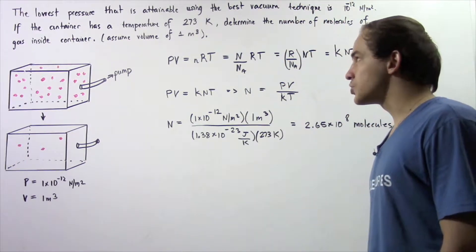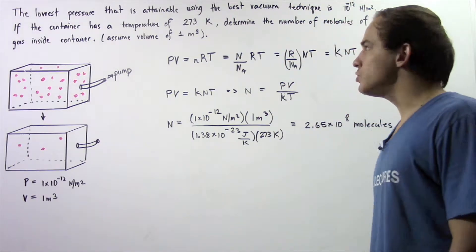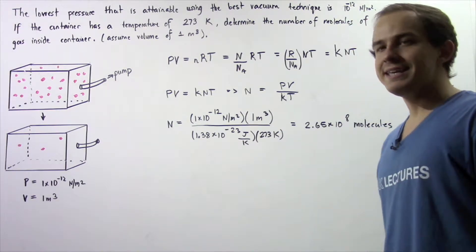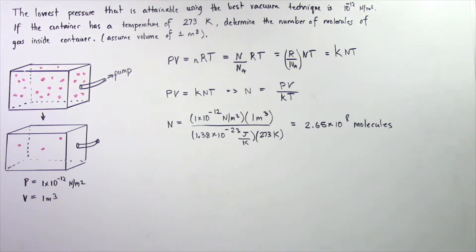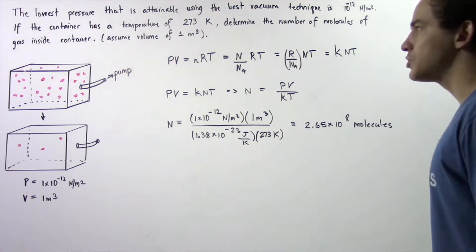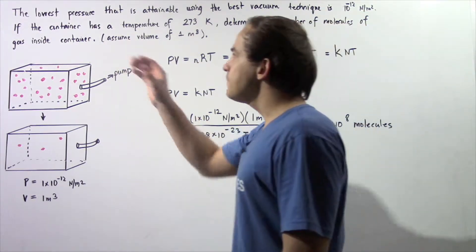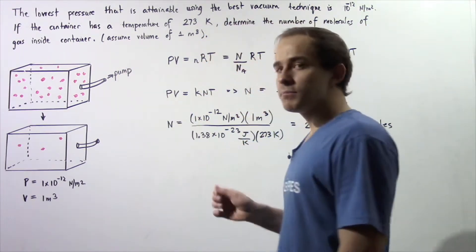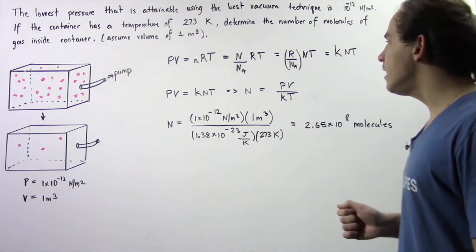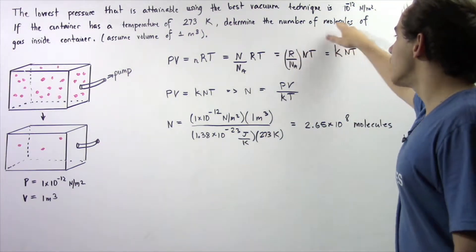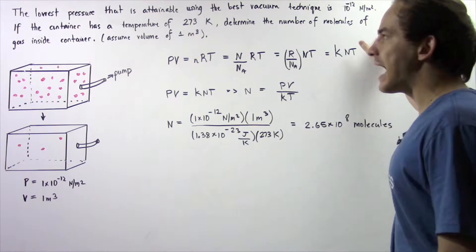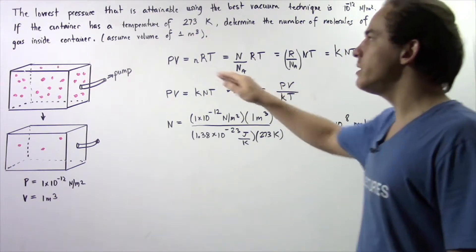The lowest pressure that is attainable using the best vacuum technique is about 1×10^-12 newtons per meter squared. If the container has a temperature of 273 kelvins, determine the number of molecules inside our gas container assuming the volume is 1 m³.